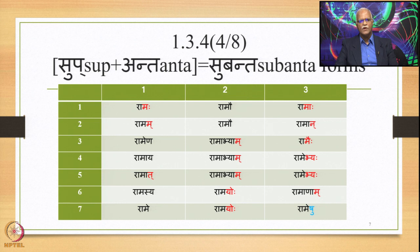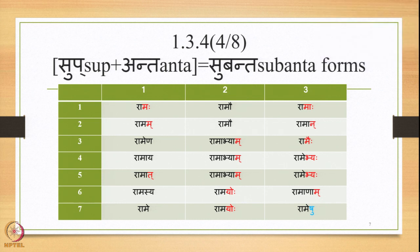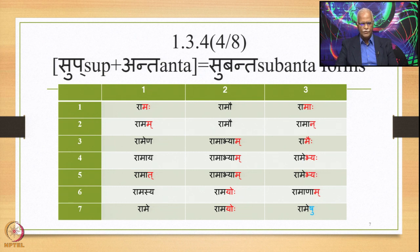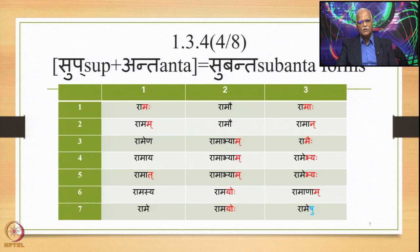Along with the Sup, the Subanta forms are listed: Ramaha, Ramau, Ramaha; Ramam, Ramau, Raman; Ramena, Ramabhyam, Ramaihi; Ramaya, Ramabhyam, Ramabhyas; Ramasya, Ramayoh, Ramanam; and Rame, Ramayoh, Rameshu. In the cases of Ramaha, Ramayoh, where there is a Visarga substitution that has already happened, when this comes into close proximity with another Subanta or Tinganta, this Visarga gets modified by some verbal elements — this is Swadhi-Sandhi.